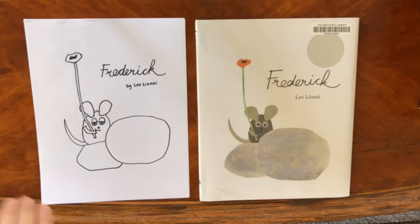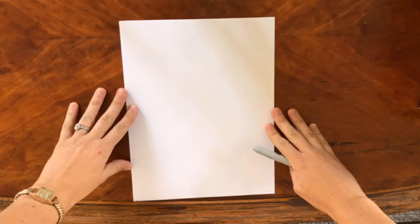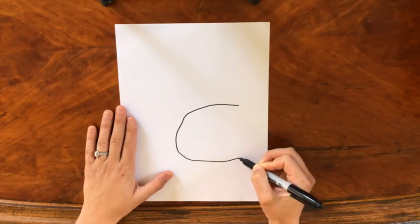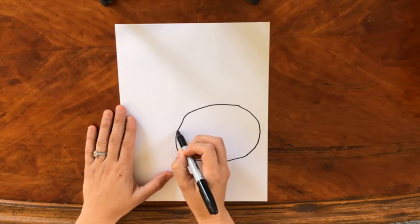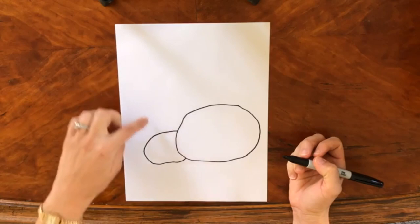Alright. Let me make sure this is centered for you guys here. So the first thing we're going to do for this Frederick drawing is actually not to draw Frederick himself, but the rock that he's next to, the boulder. So we're going to draw a large oval, maybe kind of bumpy, right there. And then we're going to draw a slightly smaller one. Okay, so that's going to set the stage for our little Frederick. He's going to sit right here.